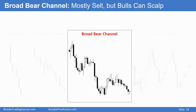A broad bear channel is a channel and it's a bear trend. It starts in the upper left, goes to the lower right. It has lower lows, lower highs. But unlike a tight bear channel, pullbacks last three, five bars, sometimes 10 or more bars. Sometimes there are trading ranges within it — triangles, trading ranges. And sometimes the market reverses up strongly enough to be always-in-long.